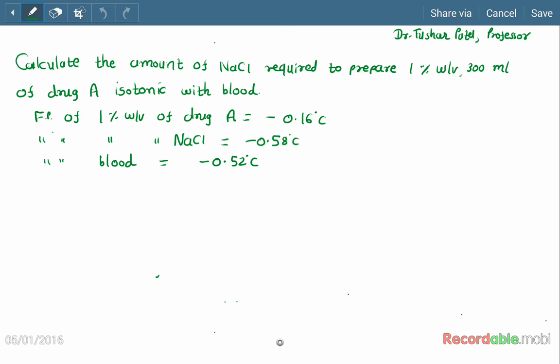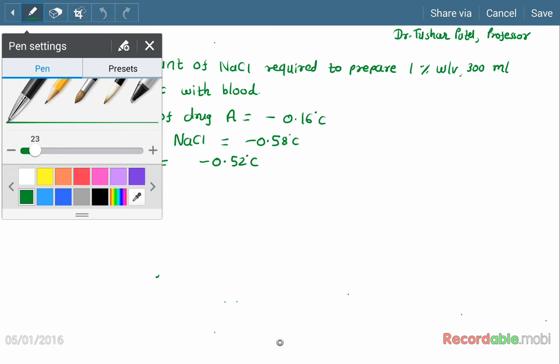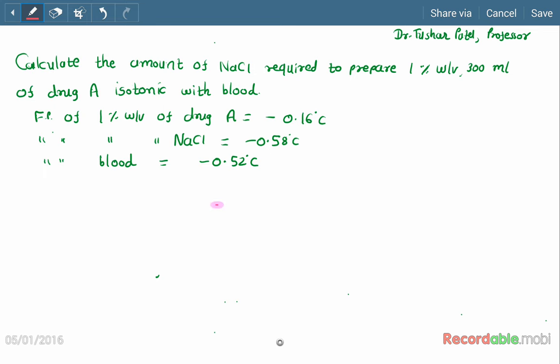Let us do the example. Calculate the amount of sodium chloride required to prepare one percent weight by volume, 300 ml of drug A, isotonic with blood. So here we are going to prepare an isotonic injectable product.